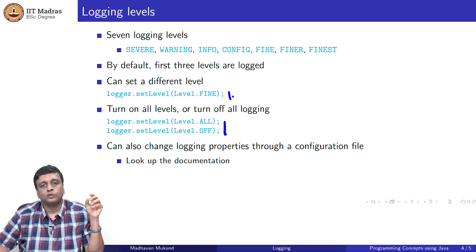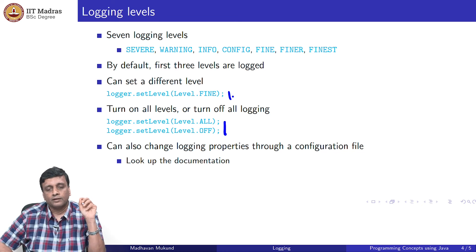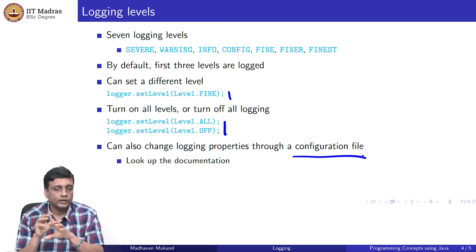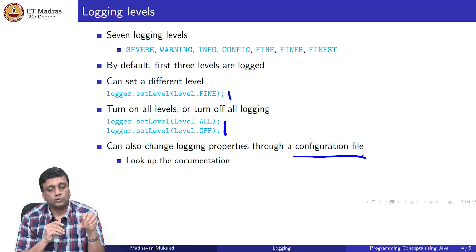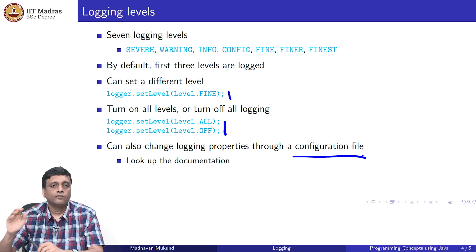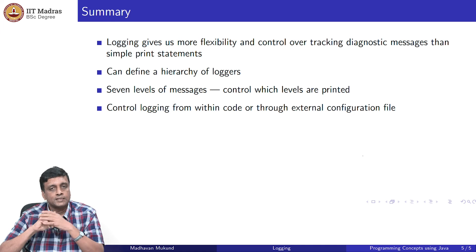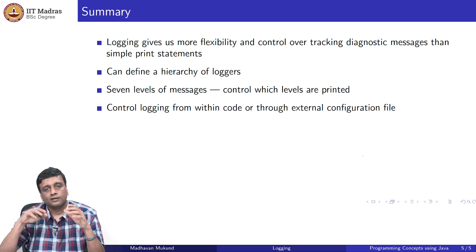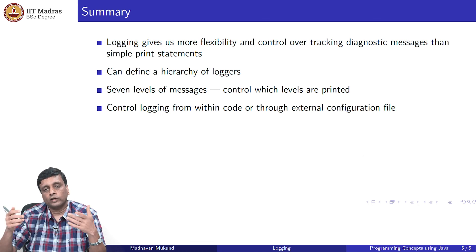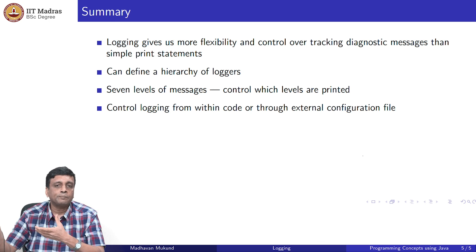If I have logging statements in the code and want to change something about the logging, it turns out you can actually do this outside the code, but it is not as simple as just passing an argument to Java. You have to set up a configuration file — a separate file outside your code. You can go into this configuration file and update it, and when you run the code, it will automatically work without changing your code. Logging is a different mechanism from print statements for keeping track of diagnostics. It gives more flexibility and control, with a hierarchy of loggers, seven levels of messages, and the ability to control logging either within code or via a separate configuration file.